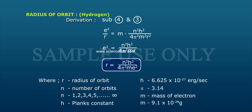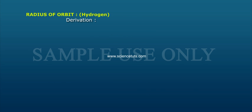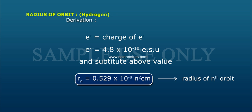The constants used are: h, Planck's constant, equal to 6.625 times 10 to the power minus 27 erg-seconds. Pi equals 3.14. m is the mass of the electron, equal to 9.1 times 10 to the power minus 28 grams. e is the charge of the electron, equal to 4.8 times 10 to the power minus 10 ESU. Substitute these values above.